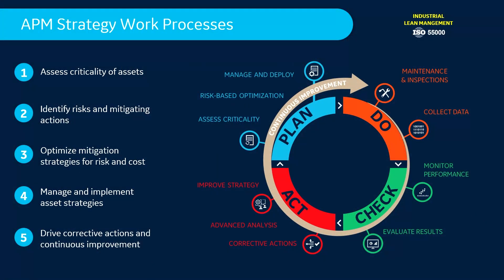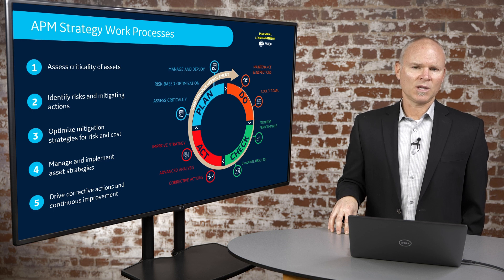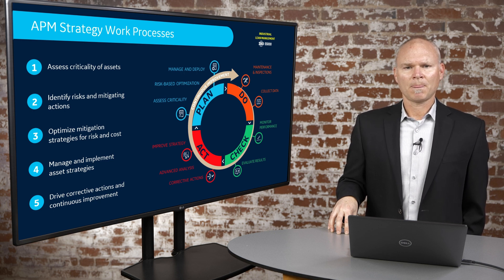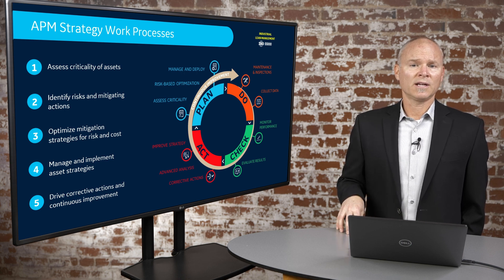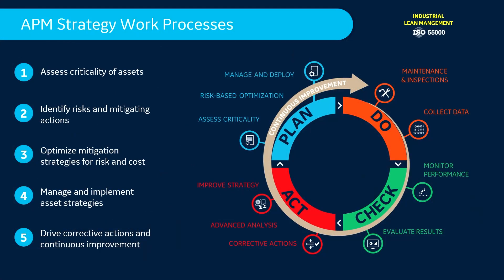When we talk about the work process associated with the asset strategy application, it really breaks down into five major pieces: assess the criticality of the assets, develop the strategy, implement that strategy, execute that strategy, and then monitor and evaluate how that strategy is performing. Are we meeting the goals and objectives we set out to meet? Does the data tell us that the strategy is performing well against those objectives, or is it not performing well?